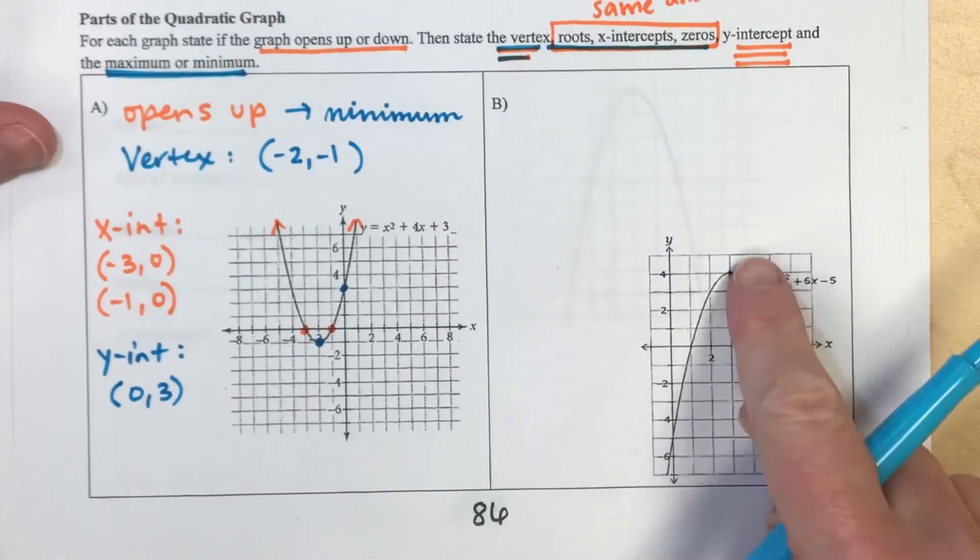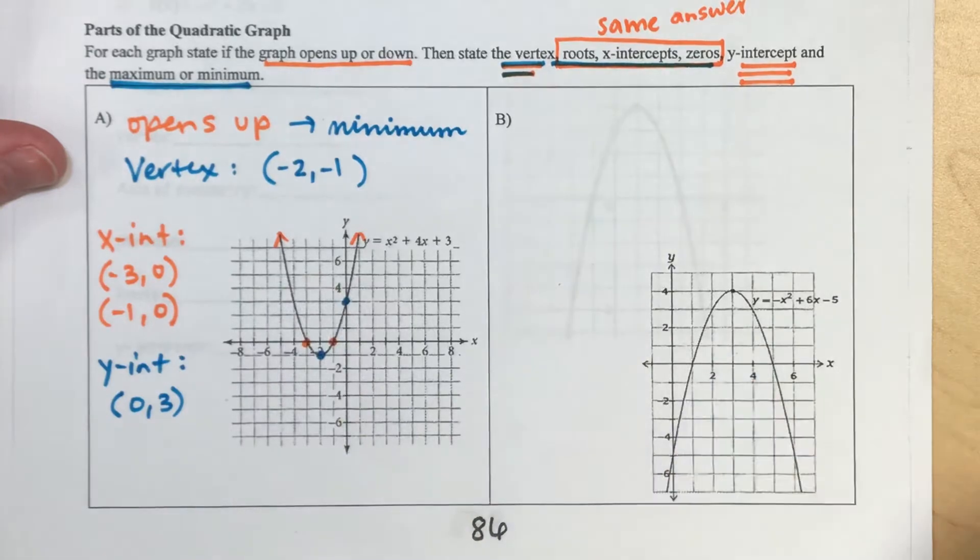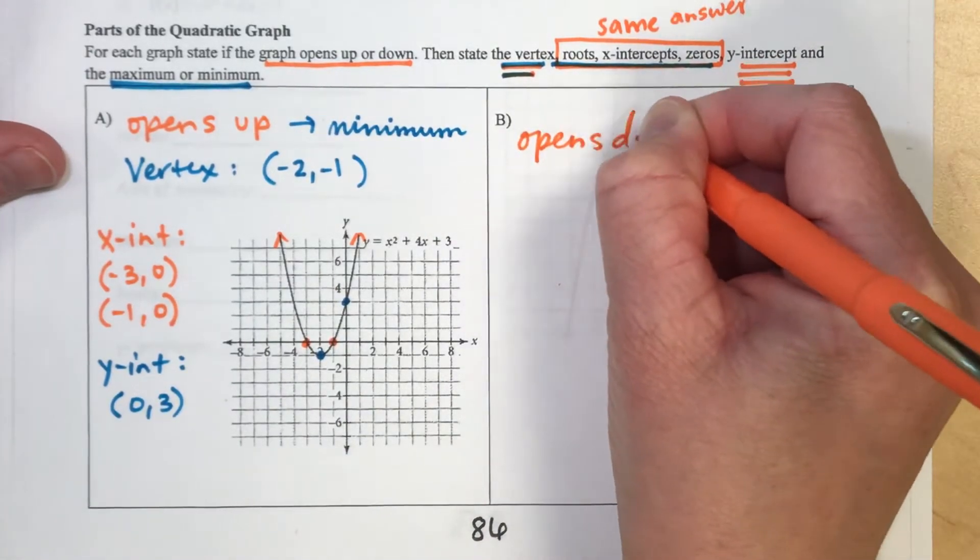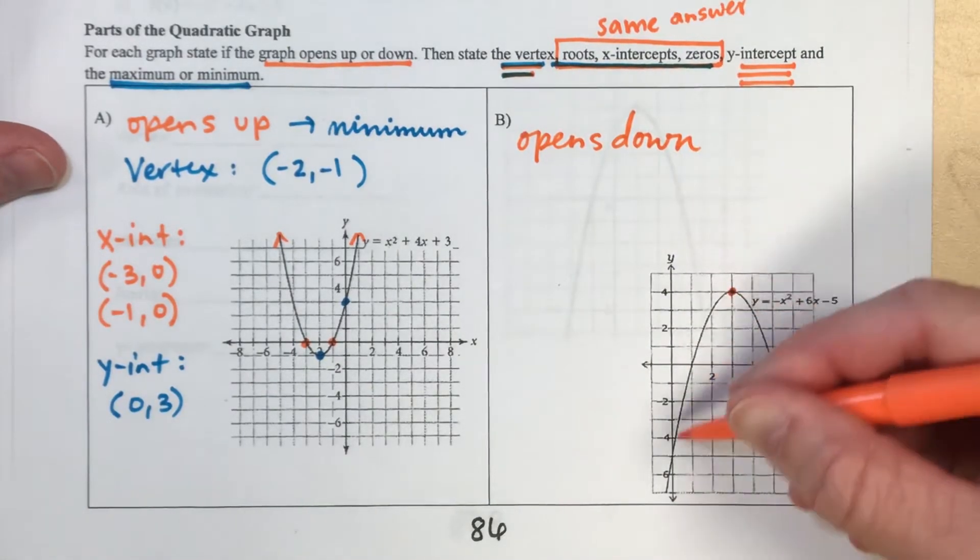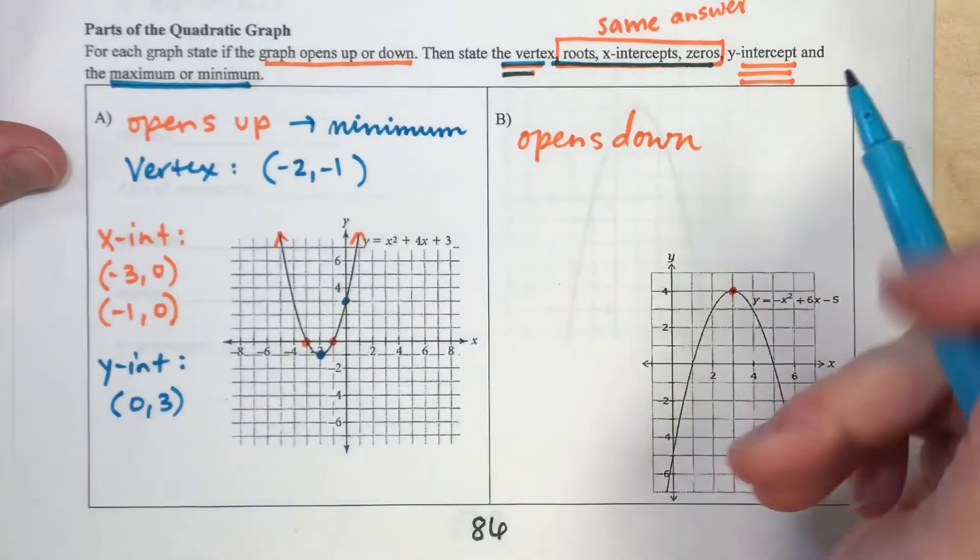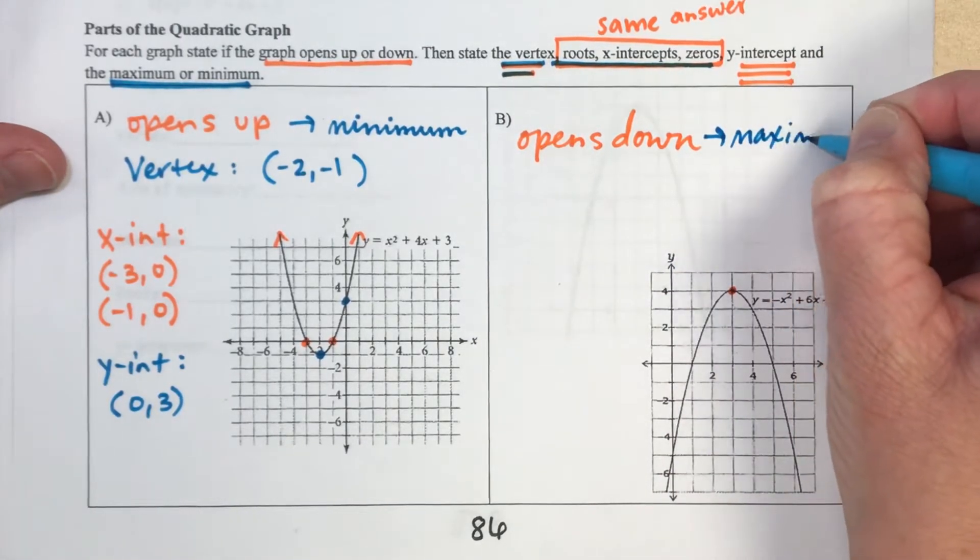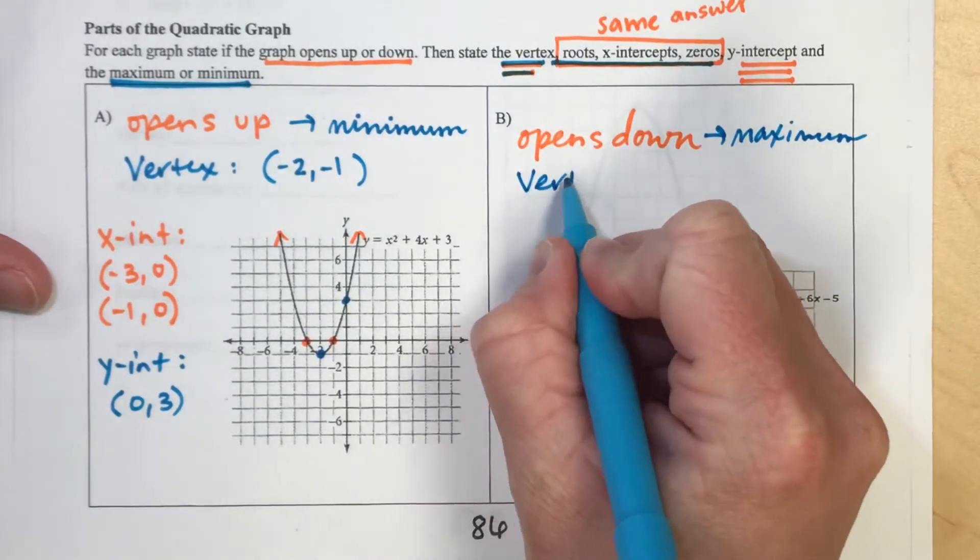Okay, now for part B here, I notice that our picture does something different than what it did over here. This picture actually opens down. So I notice we have a highest point here and I'm going to talk about what that highest point is. That highest point is going to be the maximum of your graph and let's actually identify what that vertex is.